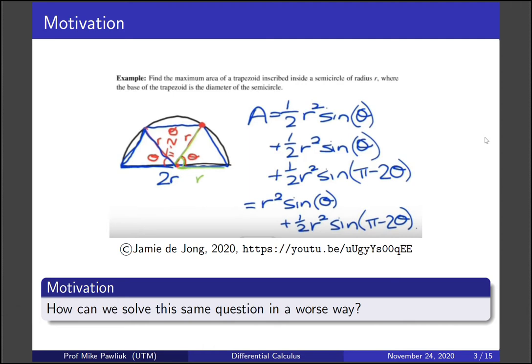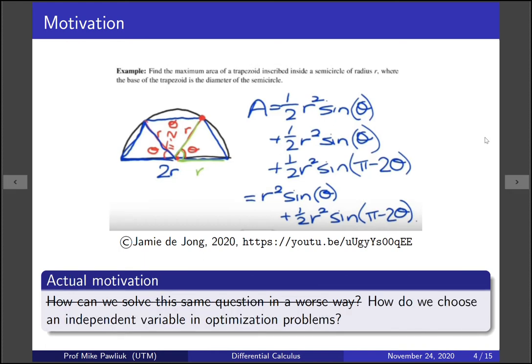Well this isn't our real motivation. We don't just want to do something worse because we can. Our actual motivation is we want to know how do we choose an independent variable in optimization problems. We're going to do ours in a worse way and then we'll compare and see why ours was worse and why would we think to use a method like in Dr. De Jong's video.